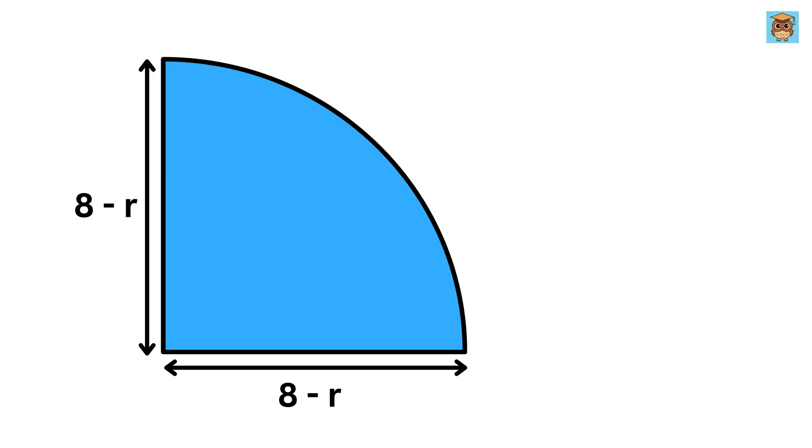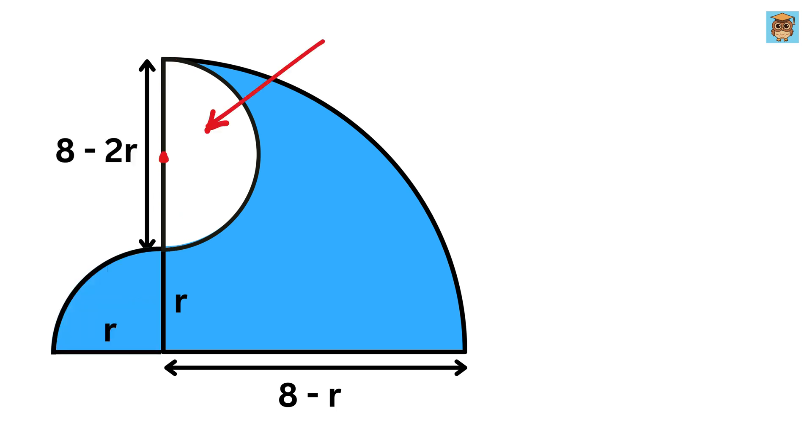This means this length is also equal to 8 minus r. Now, if this is r, then this will be of length 8 minus r minus r, or 8 minus 2r. This means the diameter of this semicircle is of length 8 minus 2r. Therefore, the radius of this semicircle will be this divided by 2 or 4 minus r.